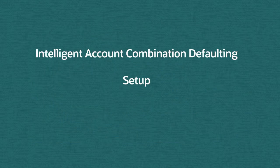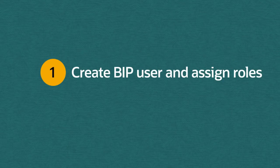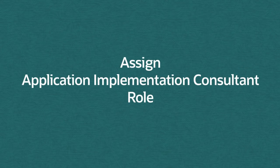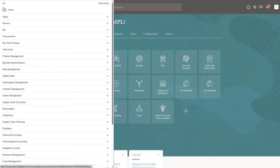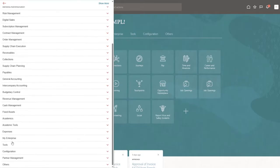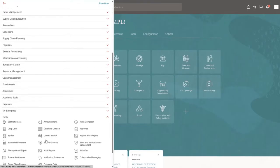Let's move on to how we set up intelligent data. The first step is to create a BIP user and role and assign some roles. The first role we're going to assign is the Application Implementation Consultant role. We're going to assign this role to a user that will be the administrator of this feature. We'll go into the Security Console, under Tools, and select Security Console.